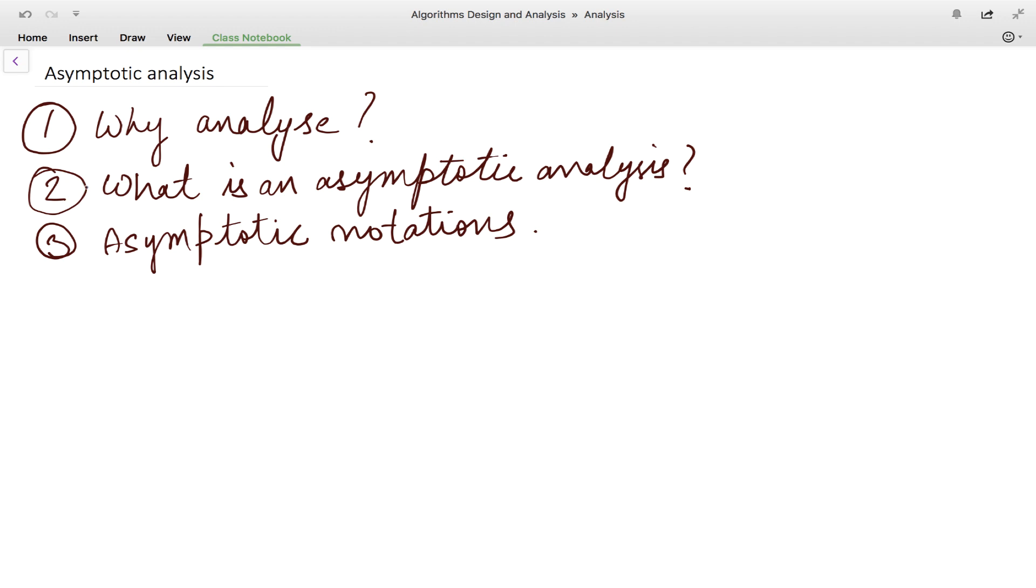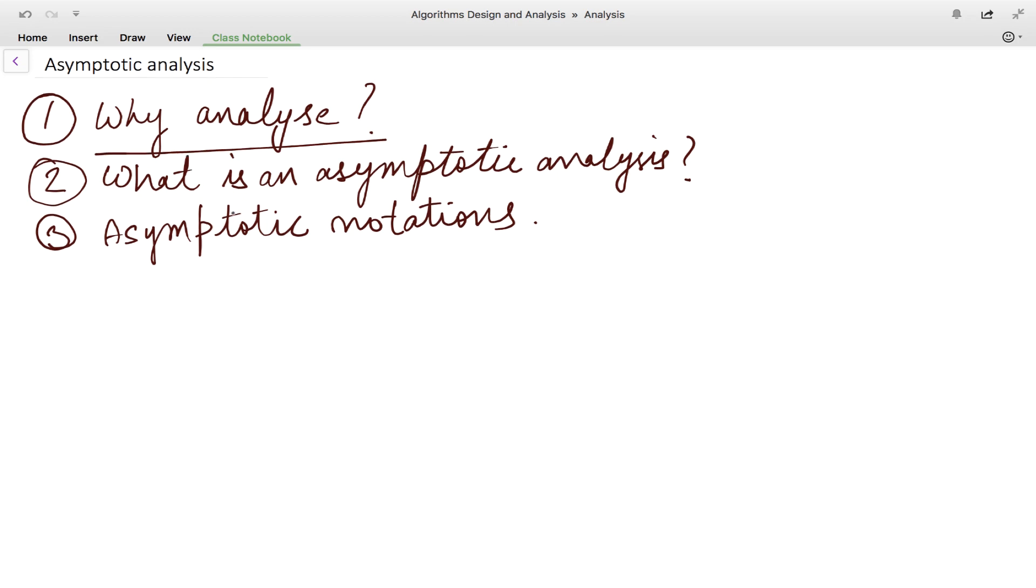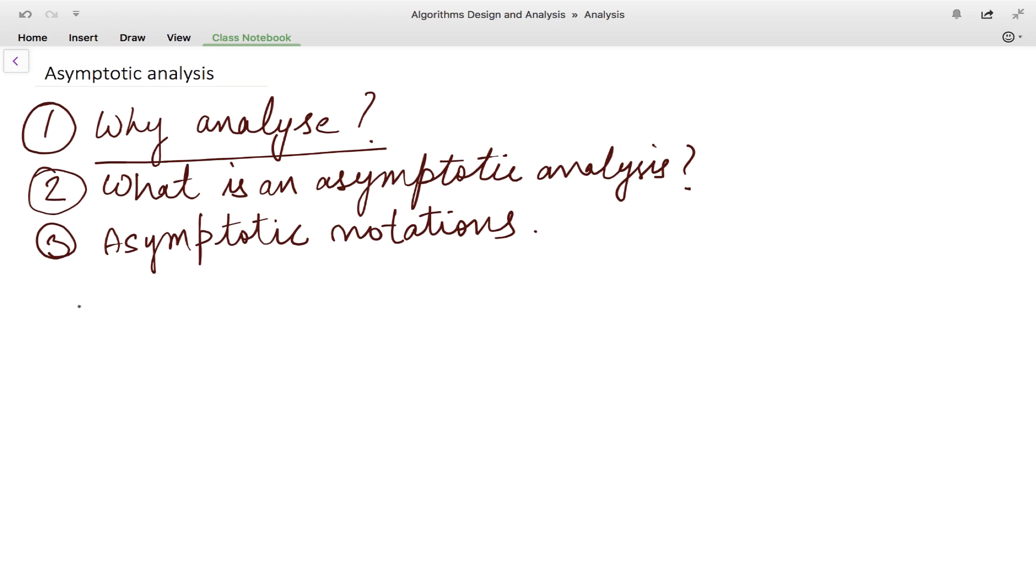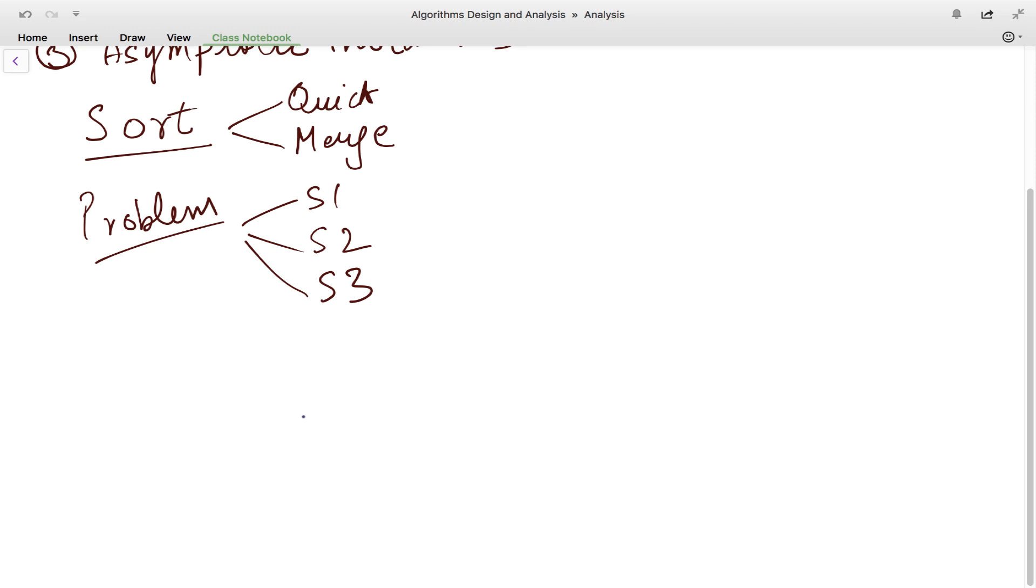Now let us first discuss why we need to analyze an algorithm. In computer science, we try to solve a problem. Let's say we are trying to sort some numbers, and to sort numbers we have different algorithms like quicksort, merge sort, and various other algorithms. So we have a problem and to solve a problem we can have multiple solutions. These multiple solutions are nothing but different algorithms. Now we need to choose the best algorithm or the best solution.